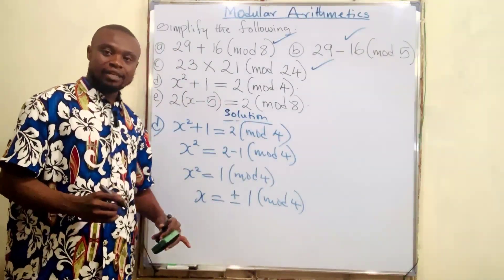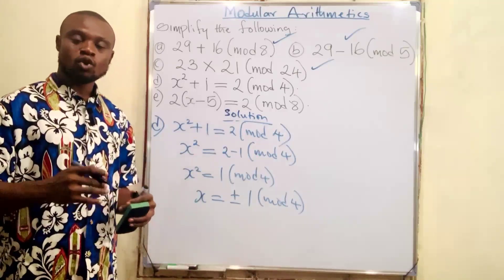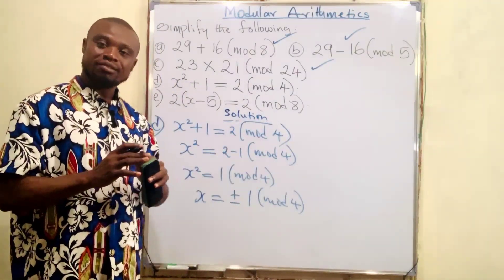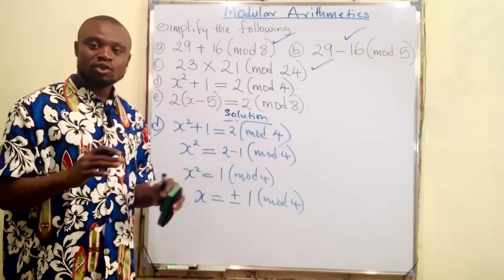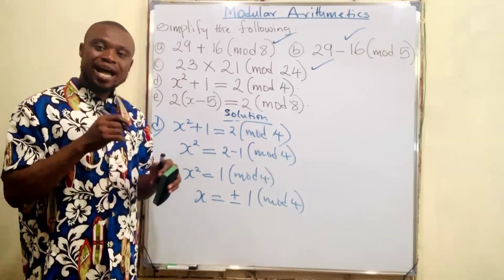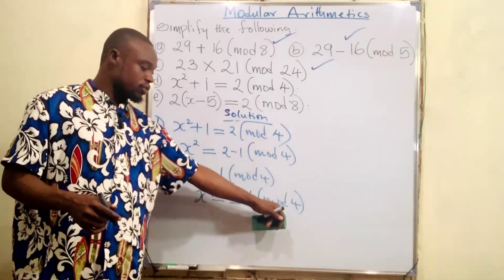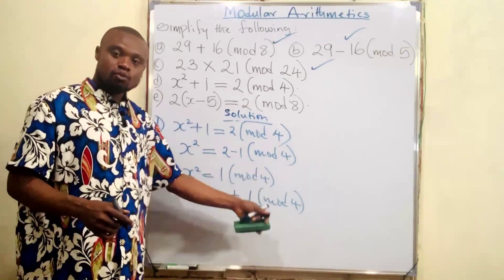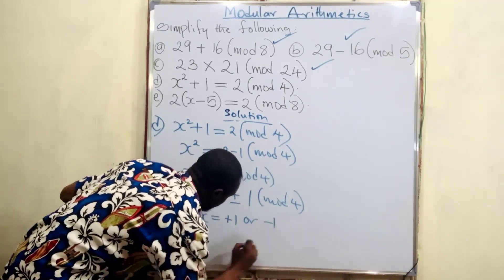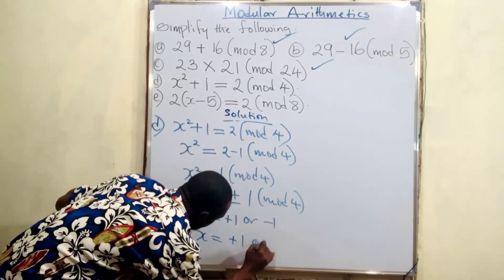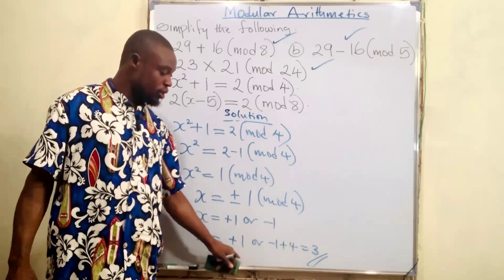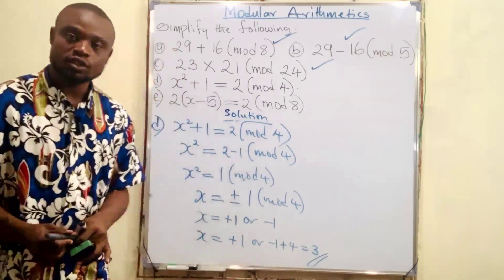Plus or minus 1 means x equals minus 1 or x equals plus 1. Recall that in modular arithmetic there is nothing like minus 1, just as in number base. So we add minus 1 to the mode: the mode here is 4, so minus 1 plus 4 gives 3. Therefore x equals plus 1 or minus 1, and minus 1 becomes plus 3. Our final answer is x equals 1 or x equals 3.